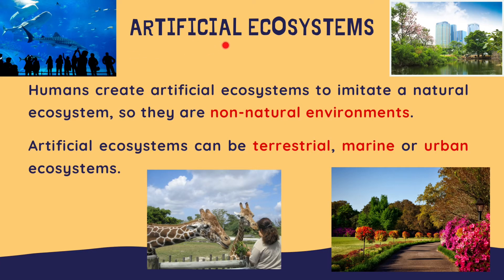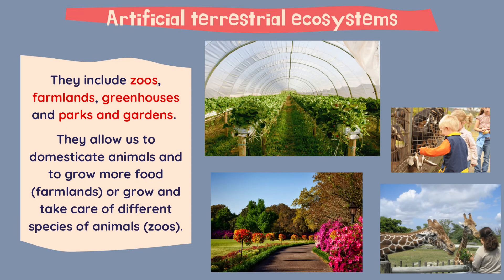And now let's move on to artificial ecosystems. Humans create artificial ecosystems to imitate a natural ecosystem, so they are non-natural environments. Artificial ecosystems can be terrestrial, marine or urban ecosystems. The artificial terrestrial ecosystems include zoos, farmlands, greenhouses, parks and gardens.